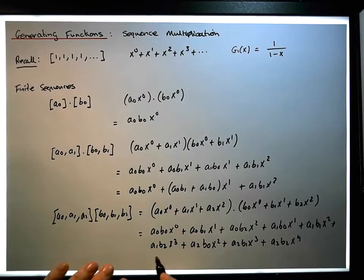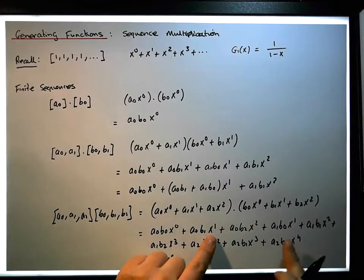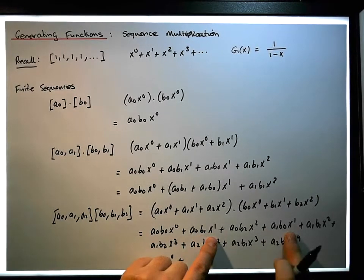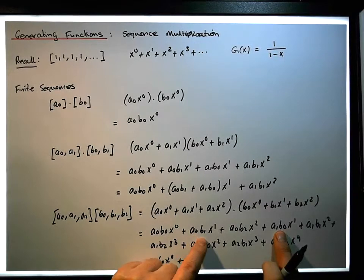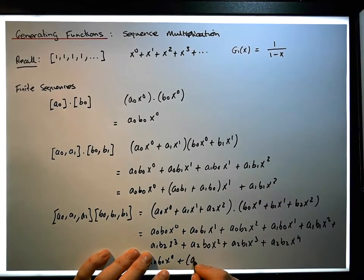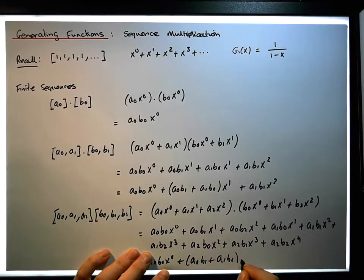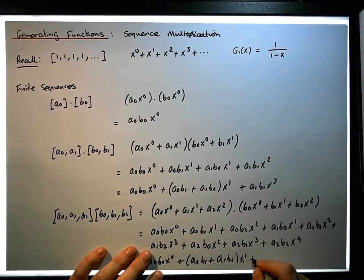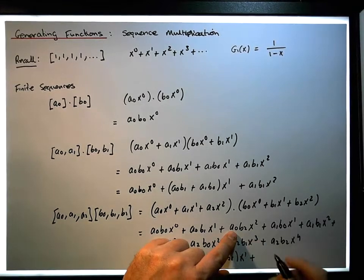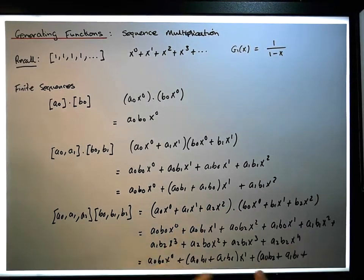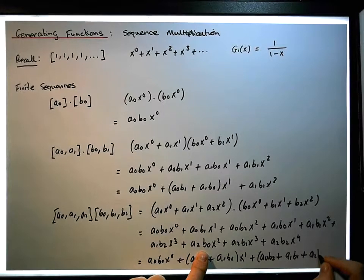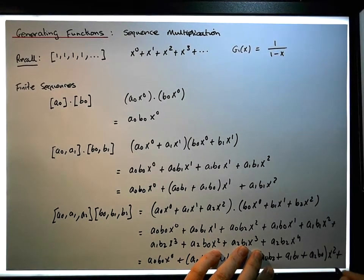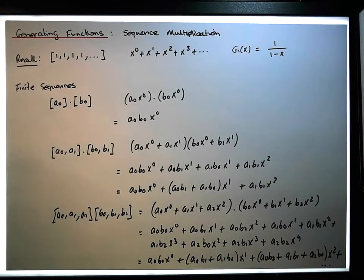Now when we group terms together: this remains as a0 b0 x^0; the terms with x^1 have coefficients a0 b1 and a1 b0, so we get (a0 b1 + a1 b0) x^1, which is what we had previously. The x squared term becomes a0 b2 plus a1 b1 plus a2 b0, times x squared, and so on.